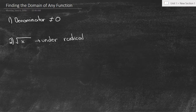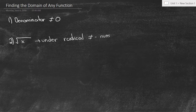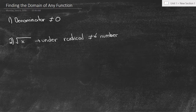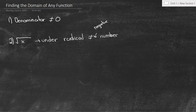Now we're going to have some examples of this. Under the radical cannot equal a negative number. So now we can figure out how these two rules are going to be so helpful.